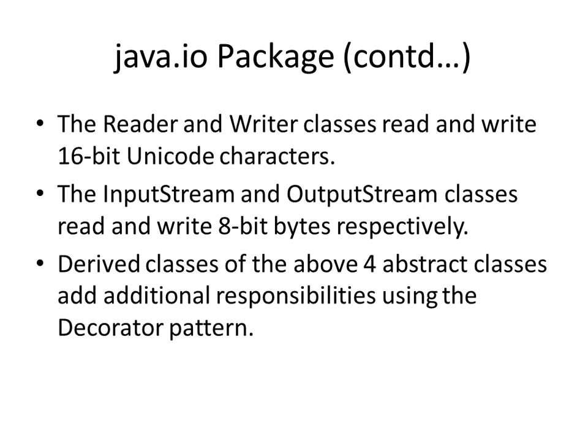So we have these four abstract classes: two for Reader and Writer, which handle character streams, and two for byte streams — InputStream and OutputStream. The Java IO package has a large number of derived classes which derive from either the Reader and Writer or the InputStream and OutputStream classes.